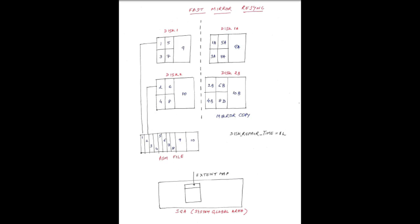As the file increases and exceeds a threshold size, extents with a higher size will be allocated. Initially 1 extent equals 1 AU equals 1MB, but subsequently the extent size will increase to 4 AU, which is 4MB, when the file size threshold is exceeded. For example, the 9th extent is 4MB in size.